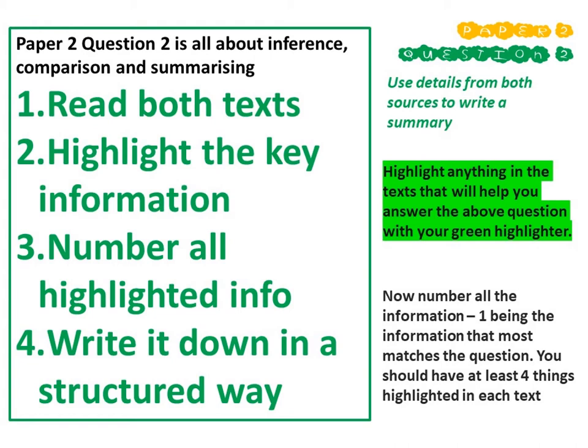So what do you have to do to answer the question? Well, for this question, you need to read both texts in their entirety. You will highlight the key information that will help you answer the question, and we recommend that you highlight things in green because then you will not get them mixed up with the other questions on the paper. You will number everything you have highlighted, number one being the thing that most answers the question. I recommend aiming to get at least four things highlighted in each text, and then you will write it down in a structured way. If you have any queries, please send your teacher a message on ClassCharts.